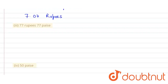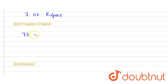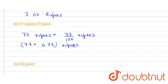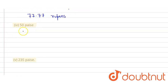In the third part, we have 77 rupees and 77 paise. That is 77 plus 77 divided by 100 rupees, which equals 77 plus 0.77 rupees. So the answer is 77.77 rupees.